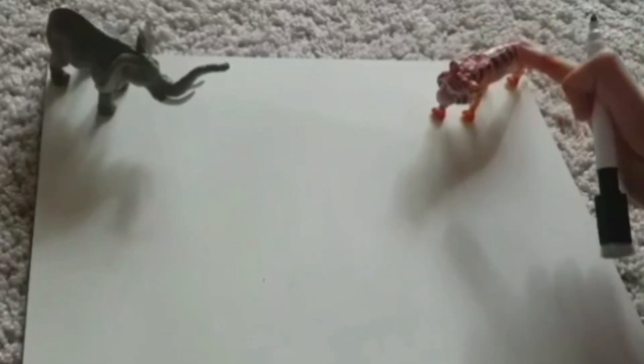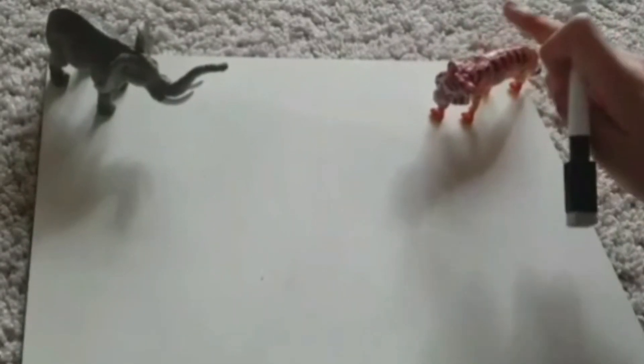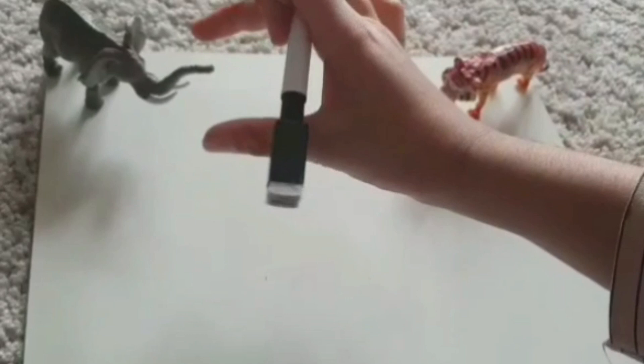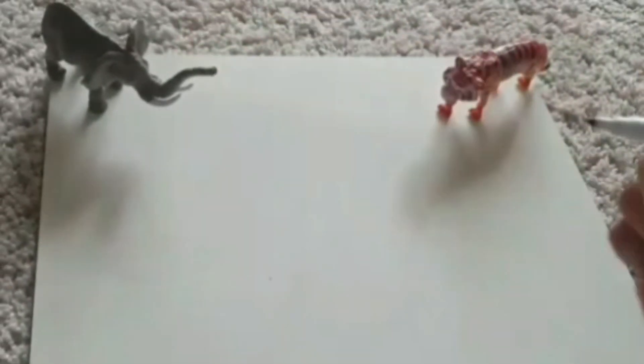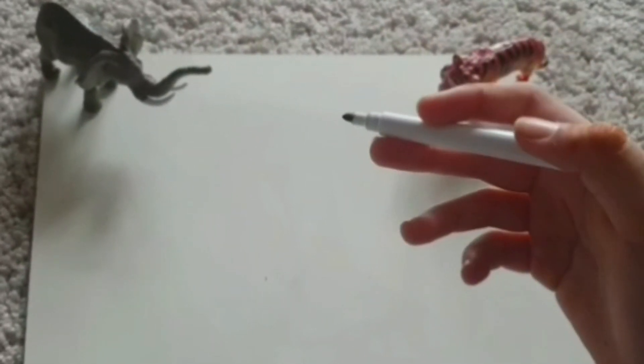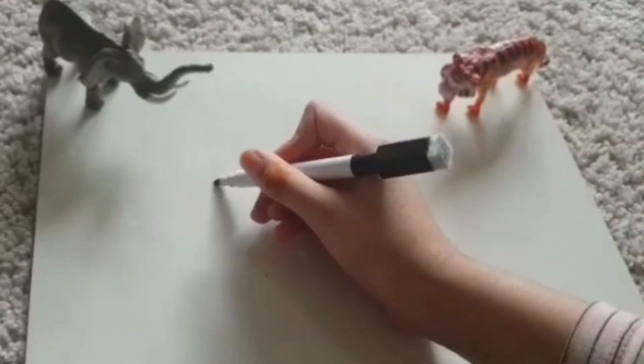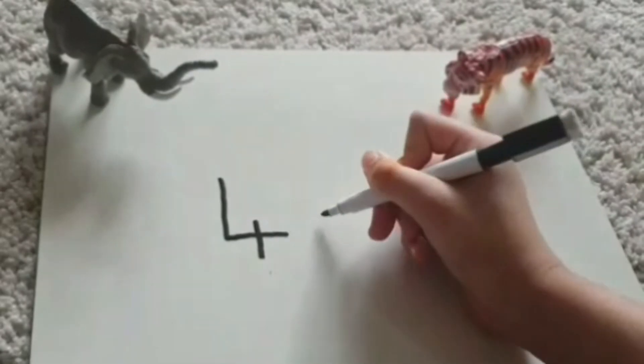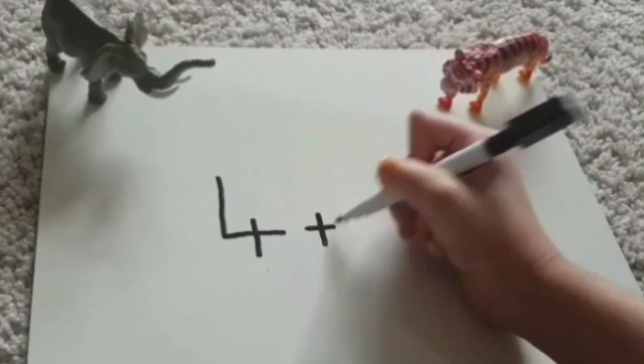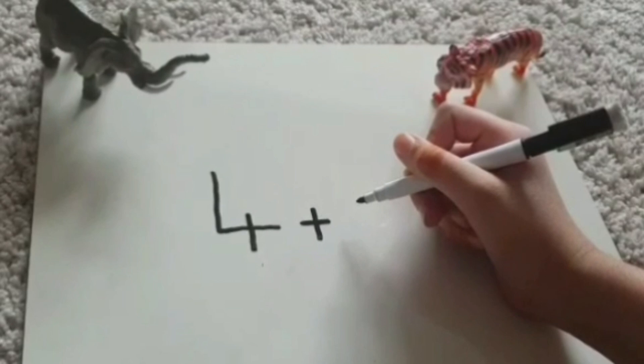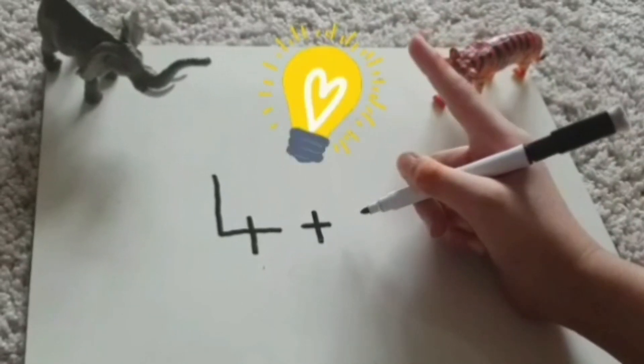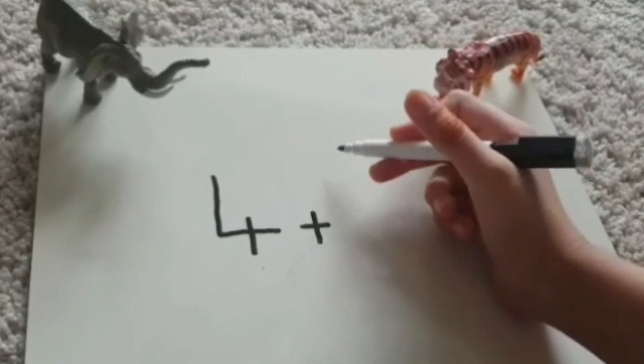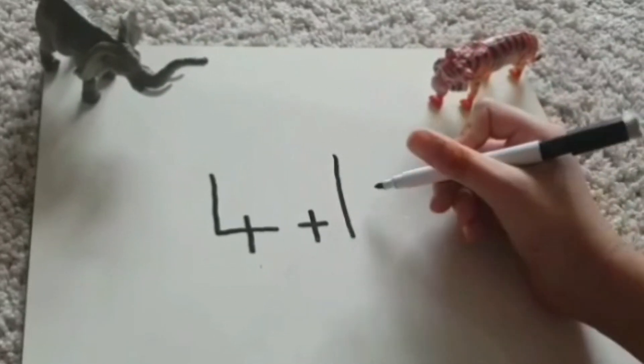So Tiger, we did a minus problem for you or a take away. Now we do an add or putting two numbers together for you Elephant. For example, let's do four add. Hmm, what number should we do? I know. Or add one equals.